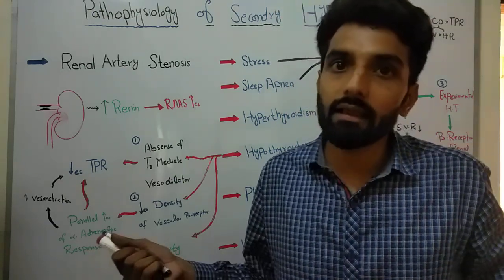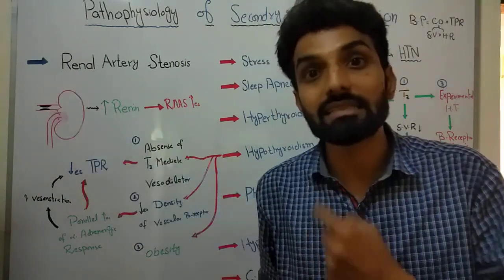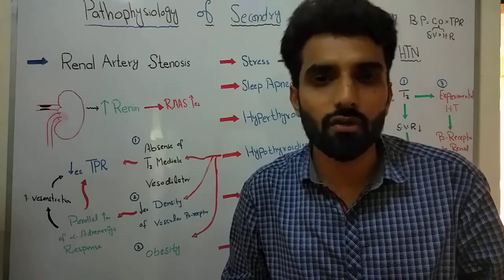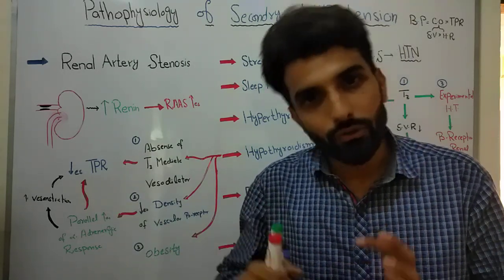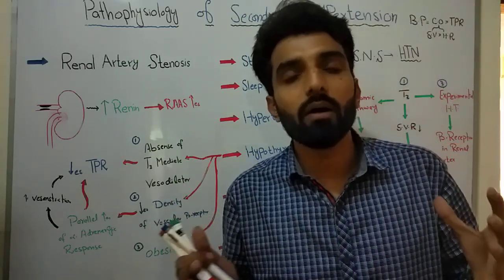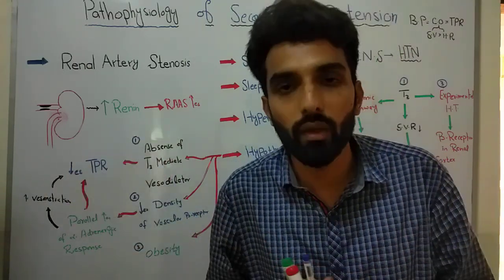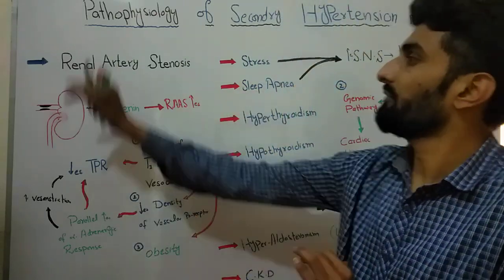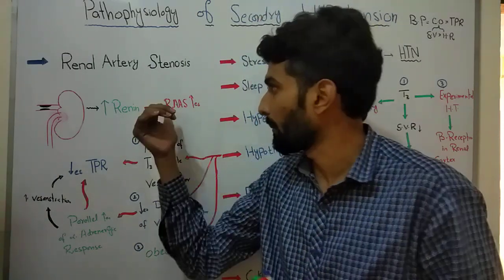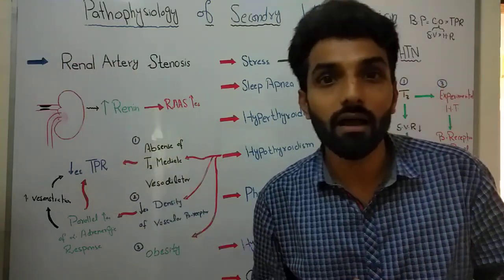As a response to low blood volume, juxtaglomerular cells will secrete renin. Renin will ultimately activate the renin-angiotensin-aldosterone system, increasing angiotensin 2 production and secretion. This will cause sodium and water retention, vasoconstriction, and ultimately blood volume and blood pressure will increase. This detailed mechanism of the renin-angiotensin-aldosterone system has been explained in the previous video. In this way, renal artery stenosis is causing hypertension.